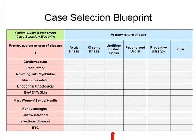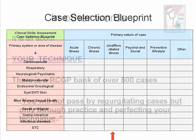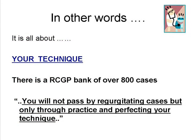Cases are mapped to a particular aspect of your curriculum — physical cases, ethical areas — but primarily you're being assessed on your management of uncertainty. There's a bank of over 800 cases which the RCGP can choose from. You are simply not going to pass by case regurgitation, but only through perfecting your technique by seeing lots of patients, getting objective feedback with your trainer, and through study groups. A generic speech about atrial fibrillation is simply not going to work.